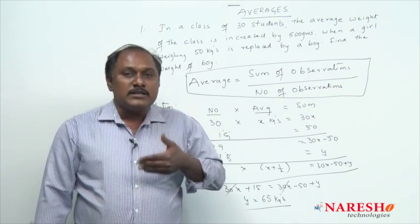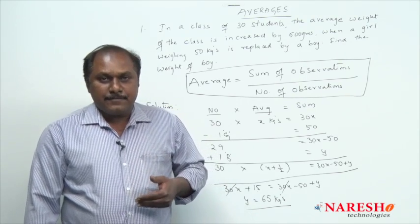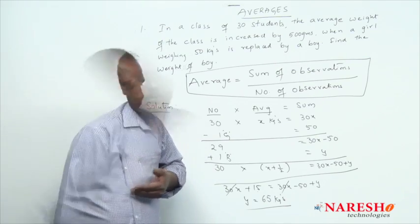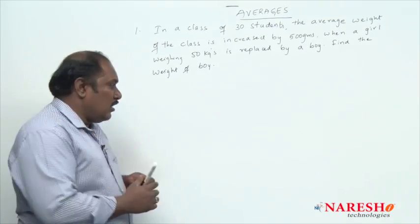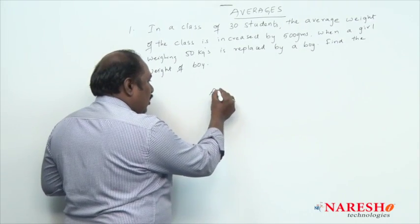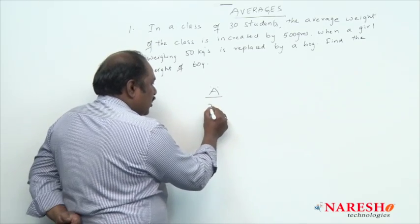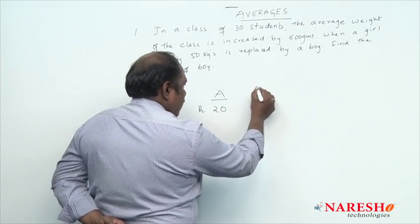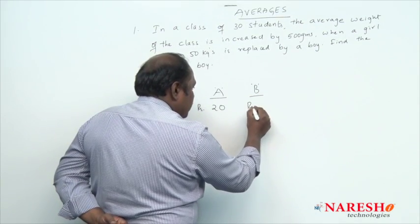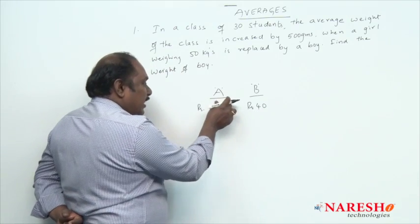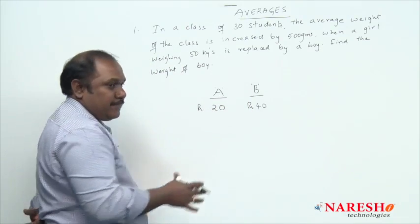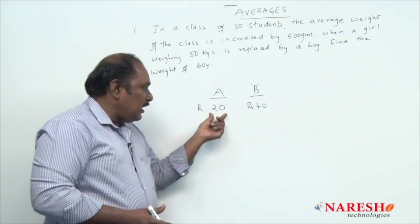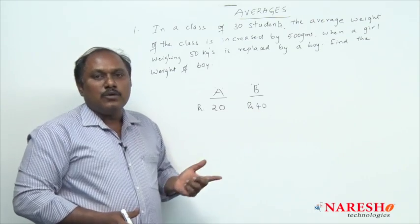To understand the logical idea, first we need to understand what average means. Let us take a small example. Suppose there is a person A who has 20 rupees, and B joined A with 40 rupees. What is the average money both A and B together have? Using the formula, it is 20 plus 40 divided by 2, which is 30.